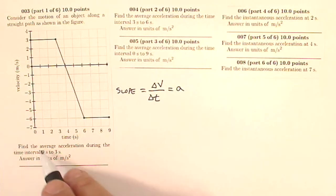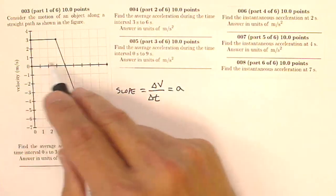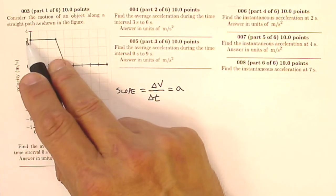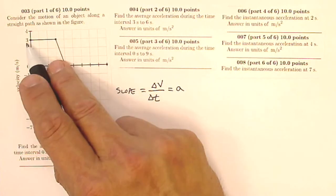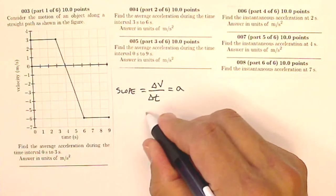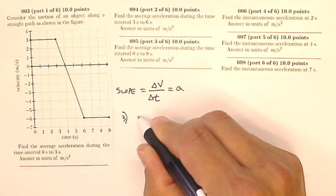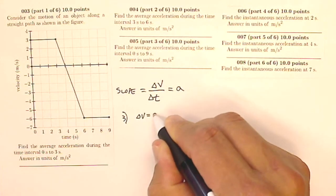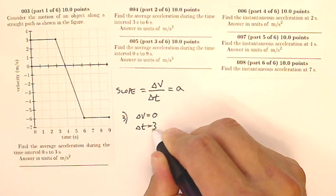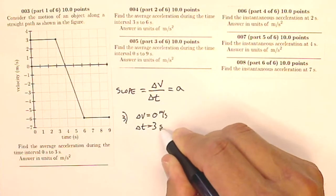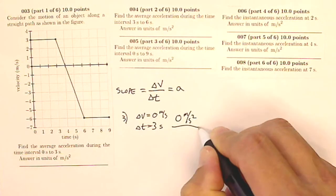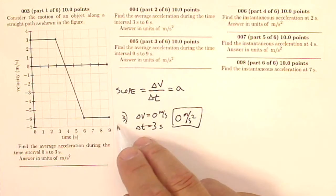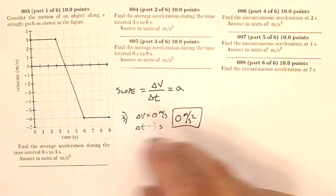The first question asks: find the average acceleration during the time interval zero to three seconds. From zero to three seconds, my velocity starts at three and remains at three — it hasn't changed at all. So for question number three, my change in velocity is zero, and the amount of time that goes by is three seconds. Zero meters per second divided by three seconds gives me zero meters per second squared. So my slope there is zero, because my acceleration is zero.